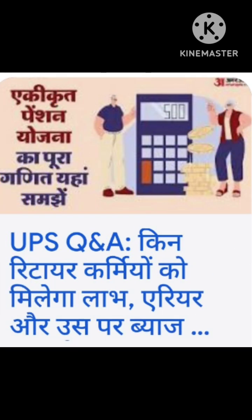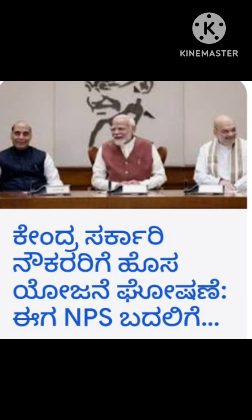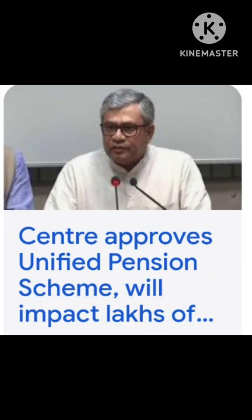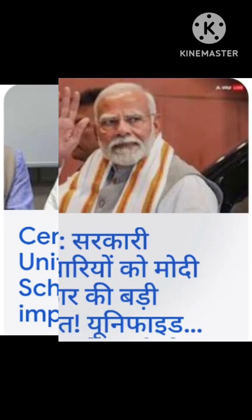Point 4: Higher Assured Minimum Pension. The Unified Pension Scheme offers an assured minimum pension of Rs. 10,000 per month at the time of retirement after a minimum of 10 years of service. According to the government pensioners' portal, the minimum pension is presently Rs. 9,000 per month after a 10-year minimum service.